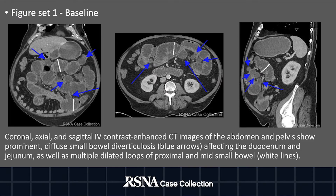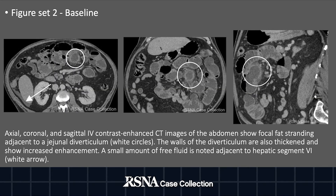The images of figure set number one show IV contrast-enhanced CT through the pelvis of prominent diffuse small bowel diverticulosis of the duodenum and the jejunum. Axial, coronal, and sagittal images of a contrast-enhanced CT scan show focal fat stranding adjacent to a jejunal diverticulum. The walls of the diverticulum are also thickened and show increased enhancement. A small amount of free fluid is noted adjacent to hepatic segment 6.